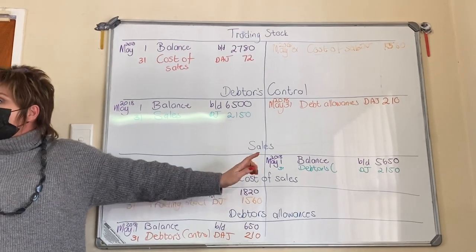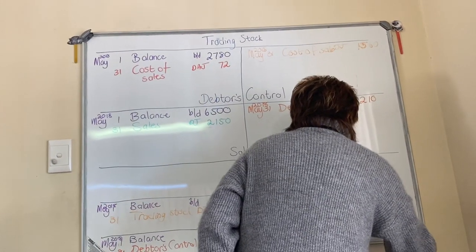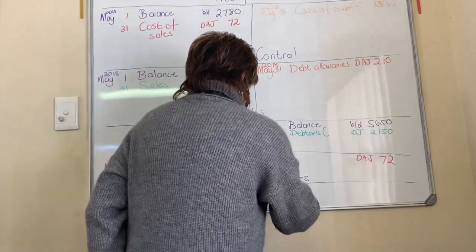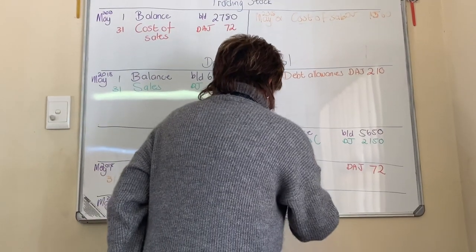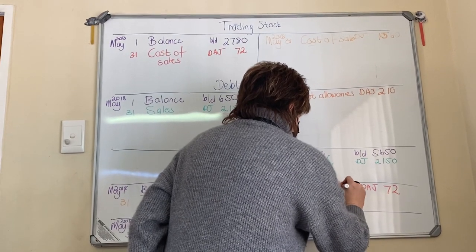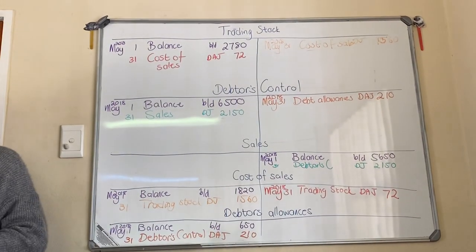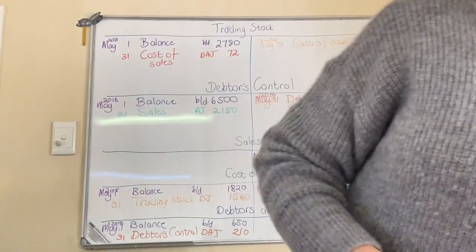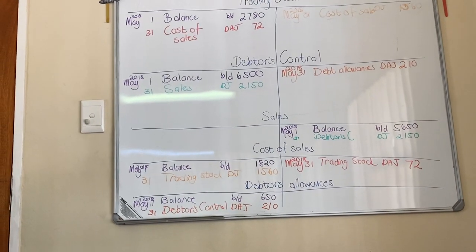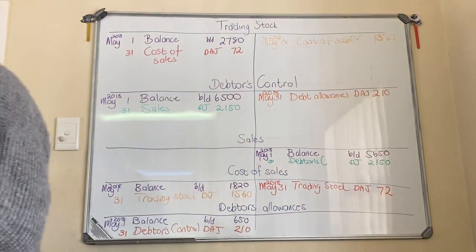I debit trading stock because I've got more of it — people brought stock back so it has increased. Now if this is a debit I have to credit cost of sales. I normally debit cost of sales but I'm cancelling these ones. This was a sale that was returned, that's why we credit cost of sales. So we've done the whole debtors allowances journal.